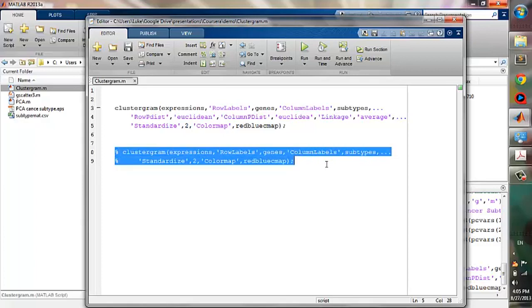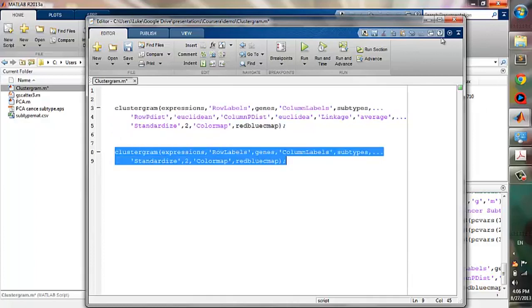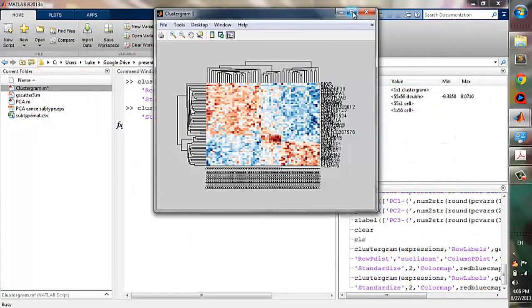So you can write the command in short as the one below. In this command, you don't need to specify row pdist, column pdist, and linkage, because Euclidean and average are already used by default. So this command looks nicer and shorter, and it will do the same thing. I'll paste here and run it. We got the same figure.